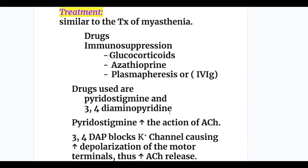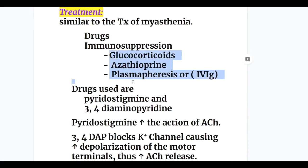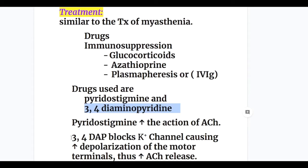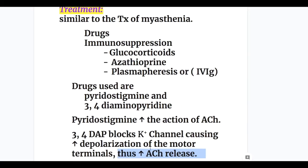The treatment of LEMS is similar to the treatment of myasthenia: immunosuppression with glucocorticoids, azathioprine, plasmapheresis, and IV immunoglobulins. The drugs used in LEMS are pyridostigmine, an acetylcholinesterase inhibitor, and 3,4-diaminopyridine. Pyridostigmine increases the action of acetylcholine by inhibiting acetylcholinesterase at the neuromuscular junction, whereas 3,4-diaminopyridine blocks the potassium channel, causing increased depolarization of the motor terminals and thus increasing acetylcholine release.